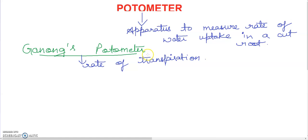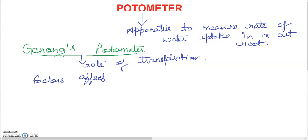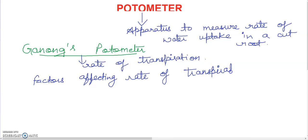What happens here in this photometer is we are going to see the factors which affect the rate of transpiration. I am not going to tell about the instrumentation of Ganong's photometer here, as instrumentation is not important for your exams. I am going to focus on the important topics only — why we use the photometer to measure factors which affect the rate of transpiration.